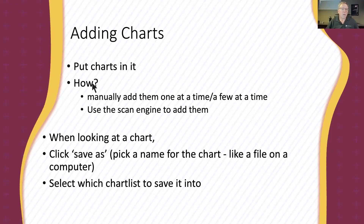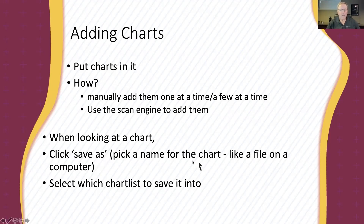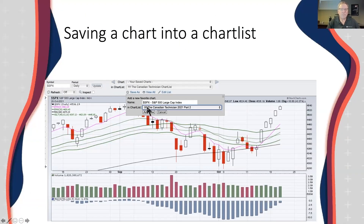To add a chart, I'll show you how to put charts in either manually one at a time or using the scan engine. When looking at a chart, you click Save As, pick the name for that chart like a file on a computer, then select which chart list to save it into — like the folder on the computer. On the StockCharts page you'll add your stock name or chart name inside your chart list from a dropdown menu. It's on every chart and very quick and easy to get to.